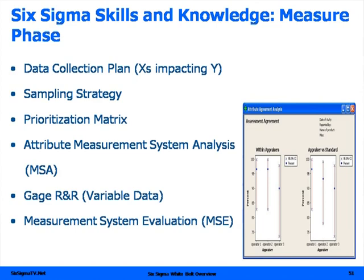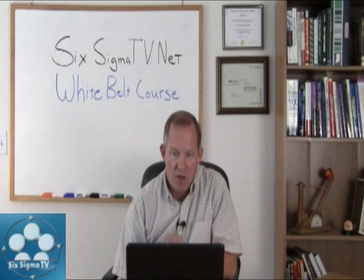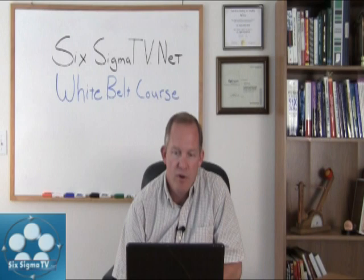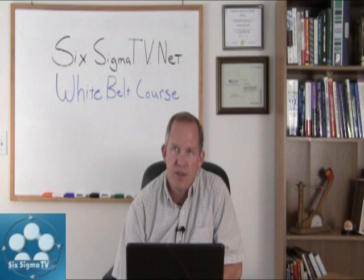Some of the skills in the measure phase include putting together a data collection plan as far as what are the X's that impact the Y. We're going to perform a sampling strategy if we cannot sample the entire population, which in most cases is not possible. We're going to prioritize some of the measurements in terms of which ones have the biggest impact on our X's. Then we're going to understand those measurements and determine the integrity or quality of those measurements by performing a measurement system analysis, making sure that the variation within our process is not due to the measurement system but is caused by variation in the process itself, not the actual measurements being taken.